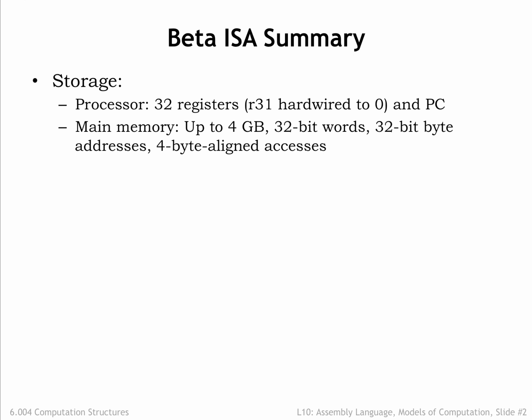The data path and control logic are connected to a large main memory with a maximum capacity of 2 to the 32nd bytes, organized as 2 to the 30th words. This memory holds both data and instructions.